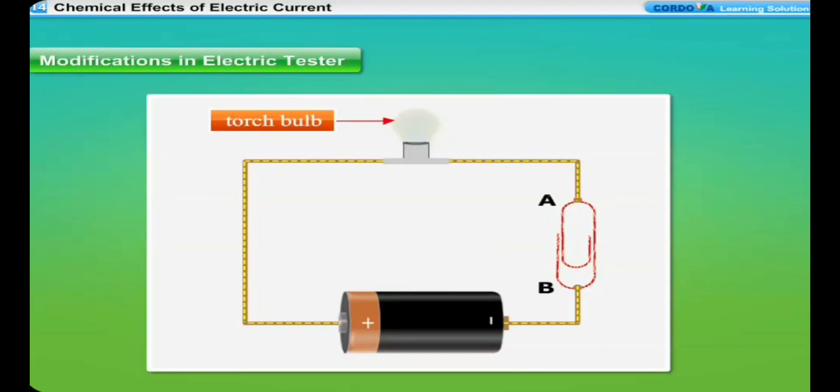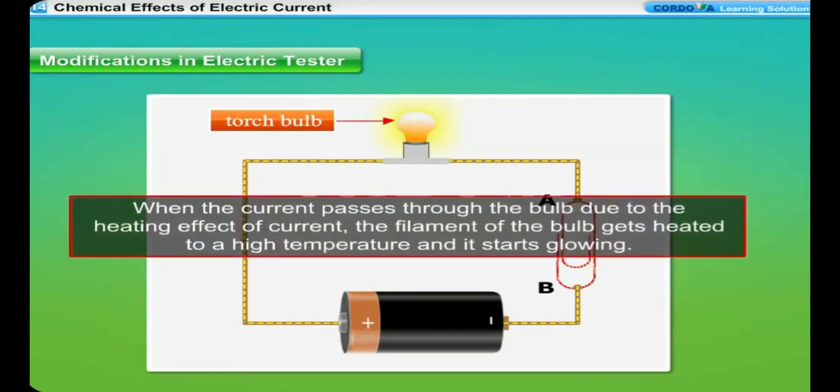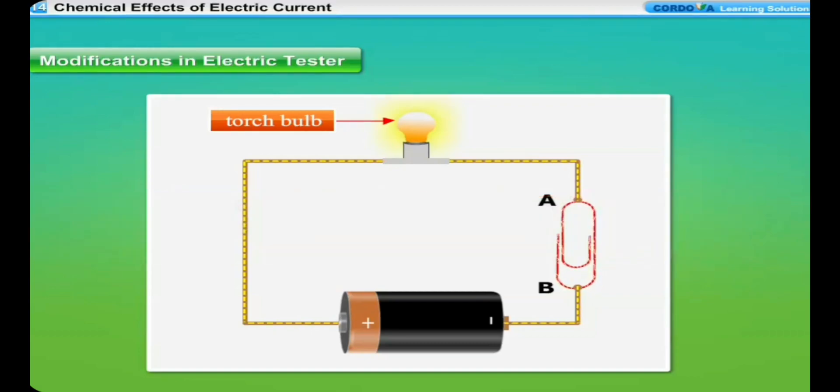Modifications in electric tester. The bulb glows when the electric current passes through an electric tester due to the heating effect of current. When the current passes through the bulb due to the heating effect of current, the filament of the bulb gets heated to a high temperature and it starts glowing. However, if the current through a circuit is too weak, the filament does not get heated sufficiently and it does not glow.